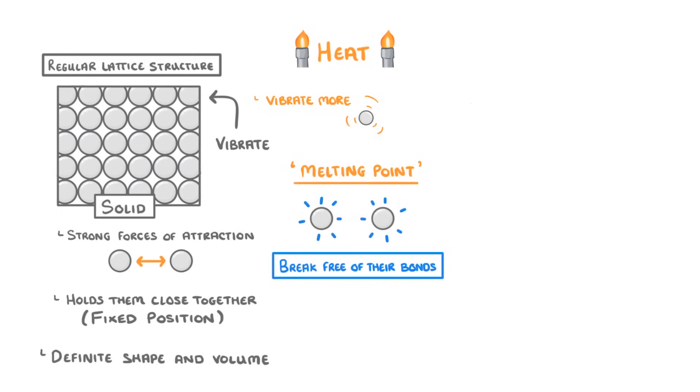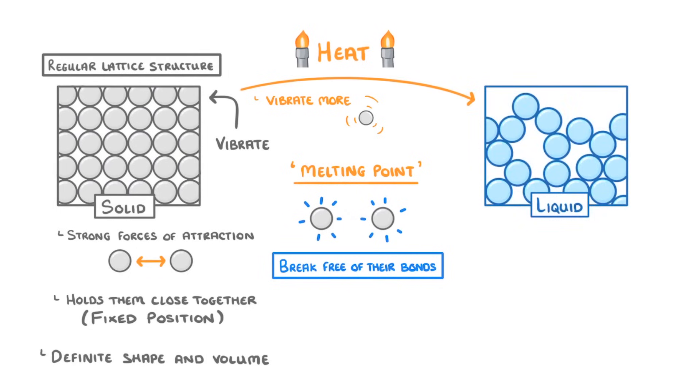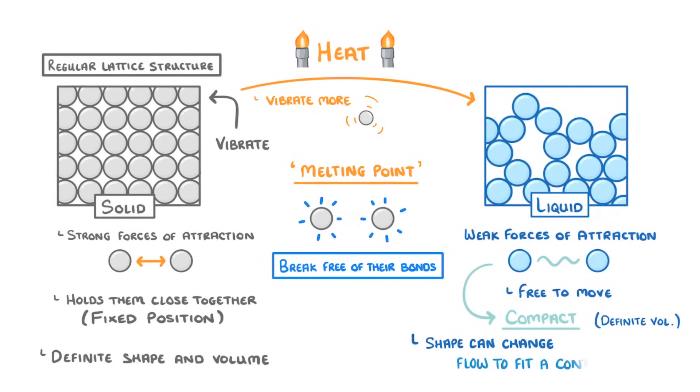In liquids there are only weak forces of attraction between the particles, so they're free to move around and are arranged pretty randomly. However, the weak forces of attraction do mean that the particles tend to stick together and are fairly compact. This means that liquids have a definite volume even though the overall shape can change and so flow to fit a container.